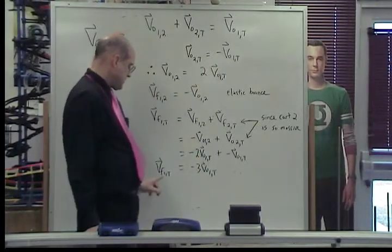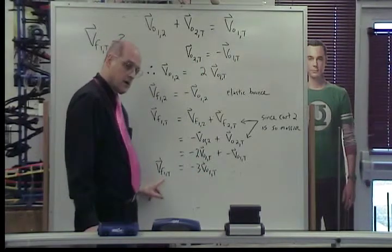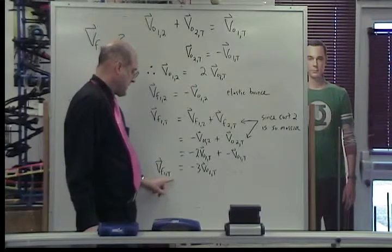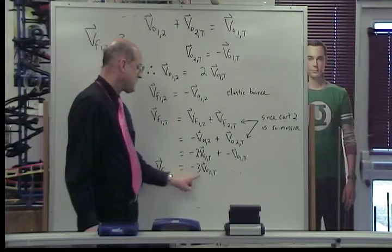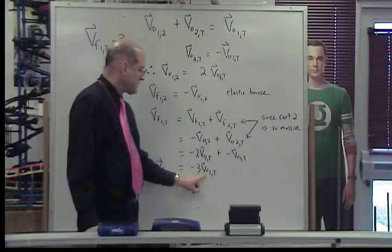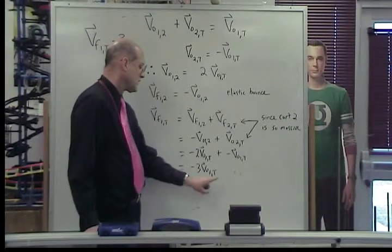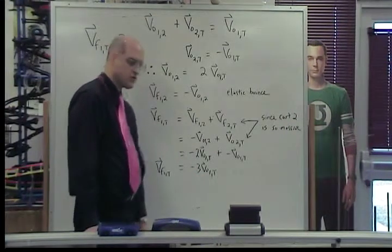So our conclusion is that the final velocity of card 1 relative to the track is equal to negative 3 times the original velocity of card 1 relative to the track. Let's try it.